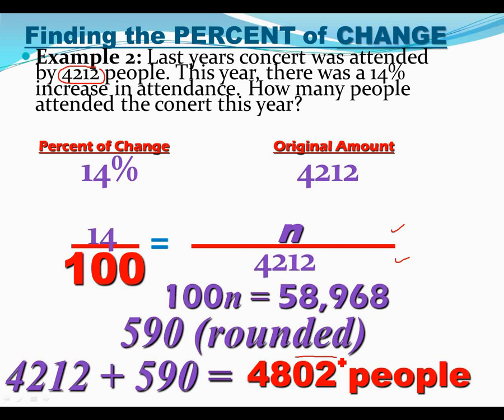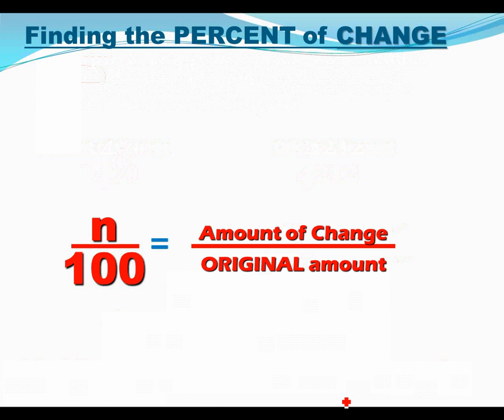Don't forget to add the number of people it increased by to figure out this year's attendance. So I did 4,212 plus 590 and got 4,802 people. That's the attendance this year — it went up 590. Make sure you add that on to 4,212.